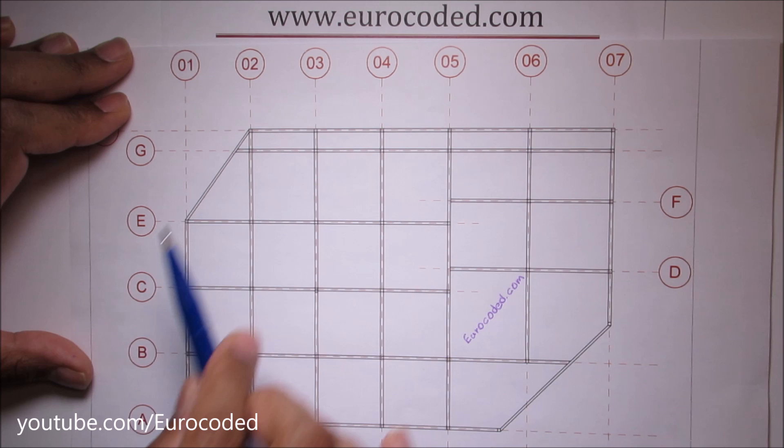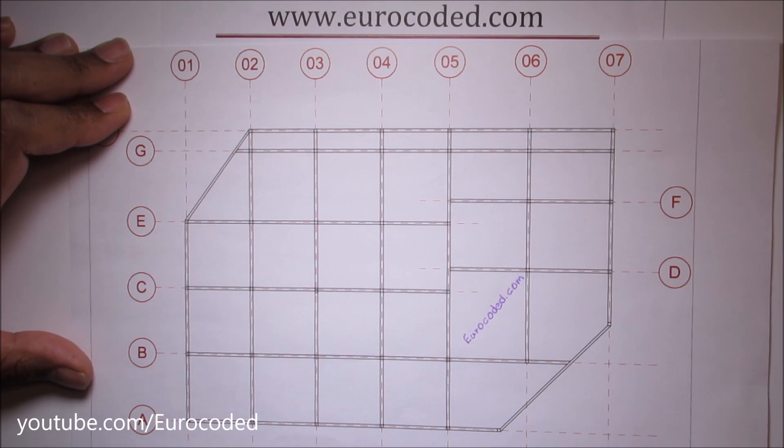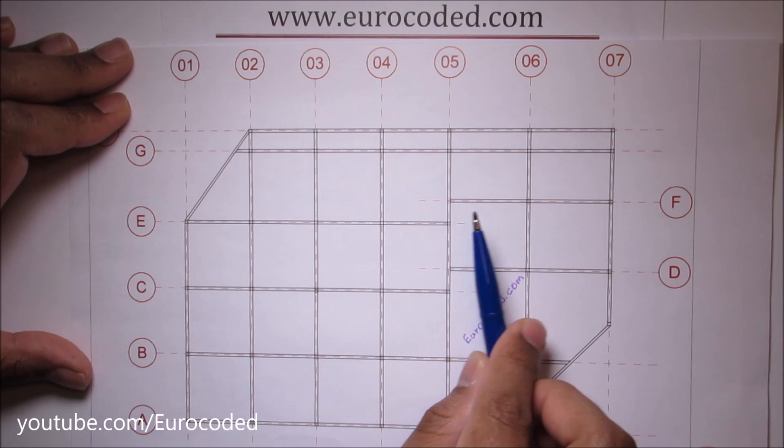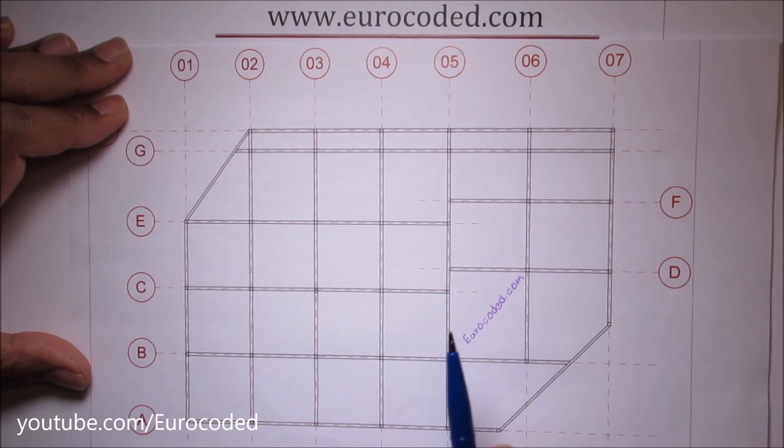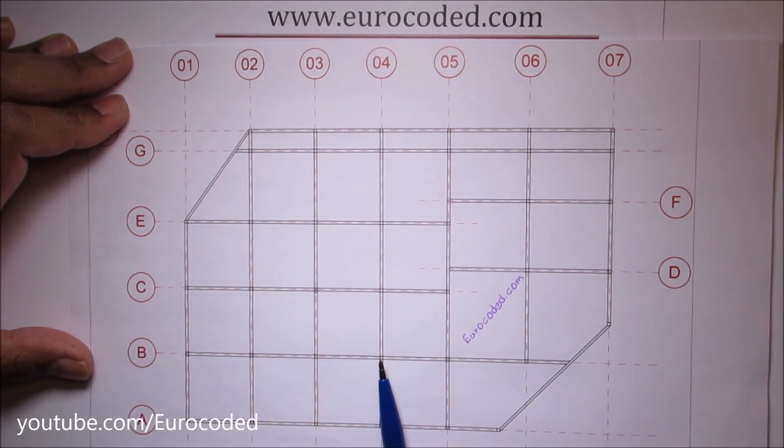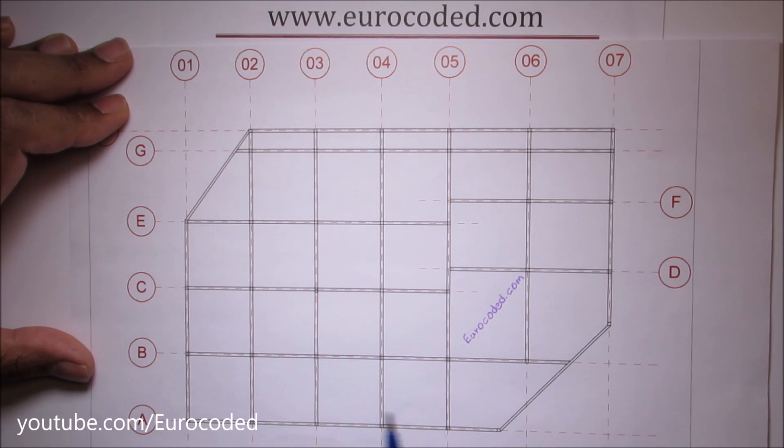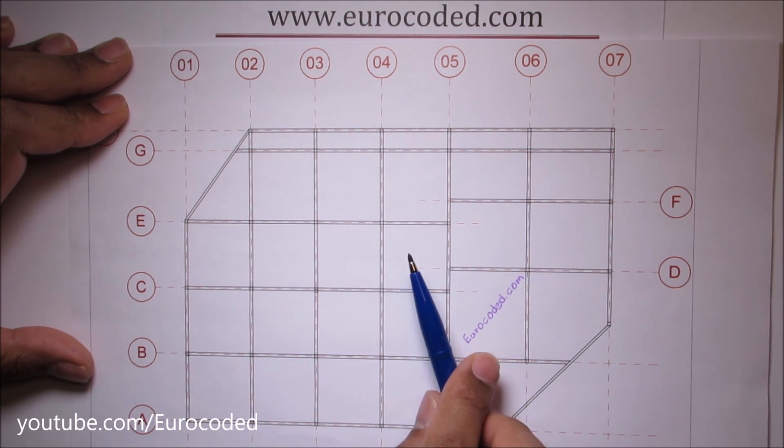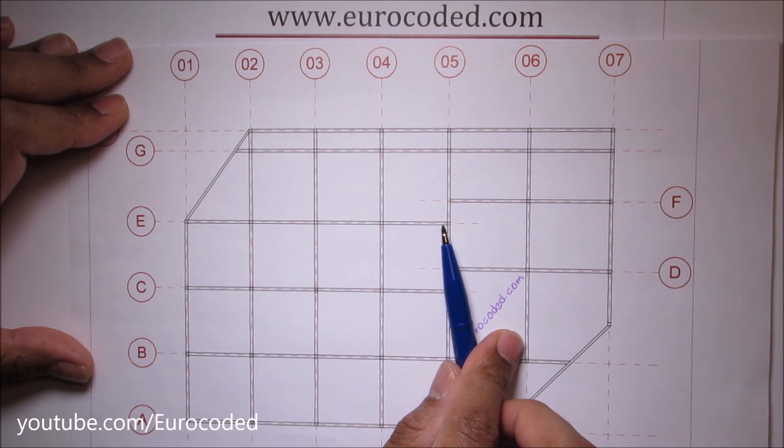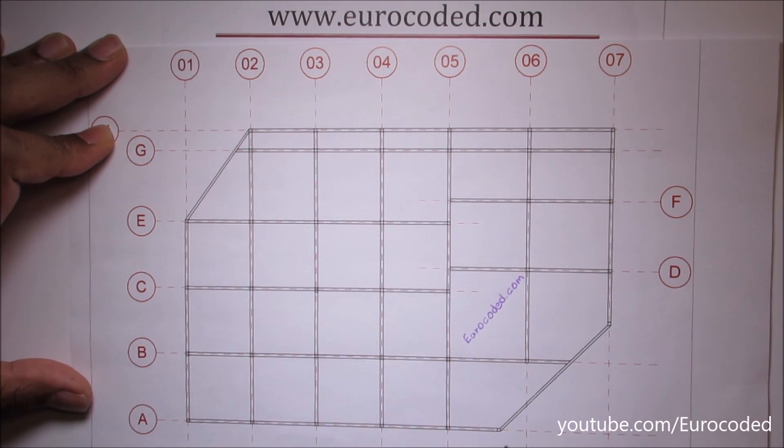A grid like this provides you with a very convenient system to reference columns or beams and it makes it very easy for someone who's reading a structural drawing to locate those reference columns or beams. This grid reference system is a typically recommended reference system.